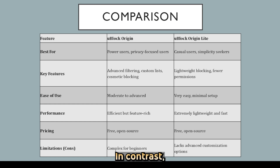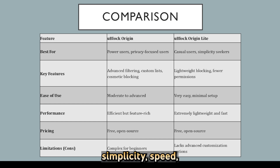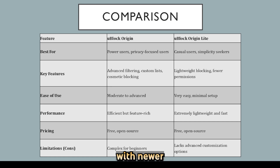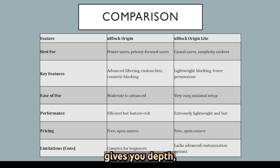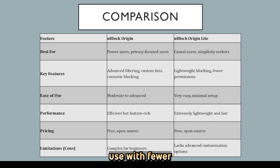In contrast, Ublock Origin Lite focuses on simplicity, speed, and compatibility with newer browser extension frameworks. Essentially, Origin gives you depth, while Lite gives you ease of use with fewer options.